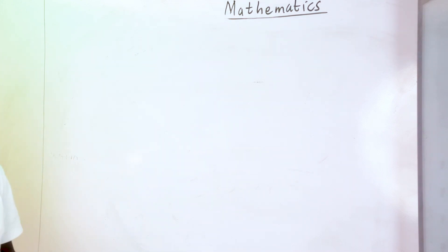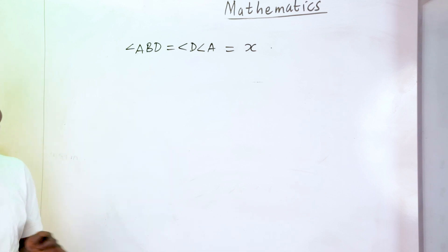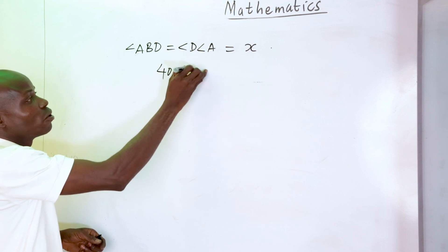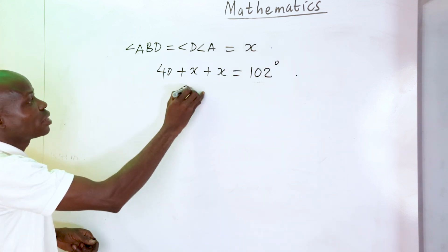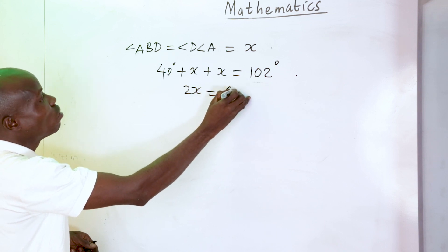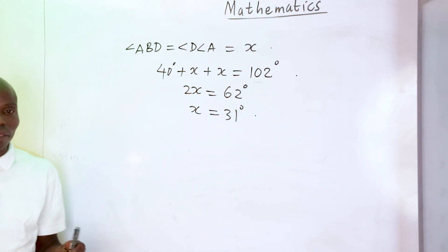Question 76: since AB equals AC and BD equals DC, angle ABD equals angle DCA, both equal to x. Using the exterior angle of a quadrilateral: 40 plus x plus x equals 102 degrees. So 2x equals 62 degrees, giving x equals 31 degrees. The correct option is B.